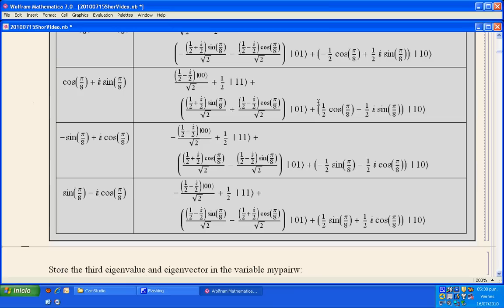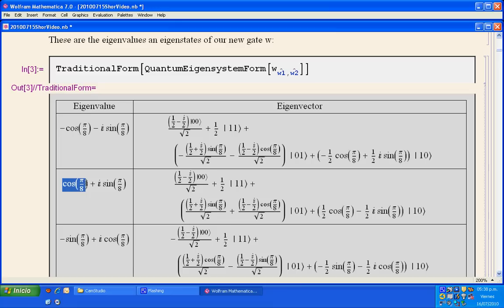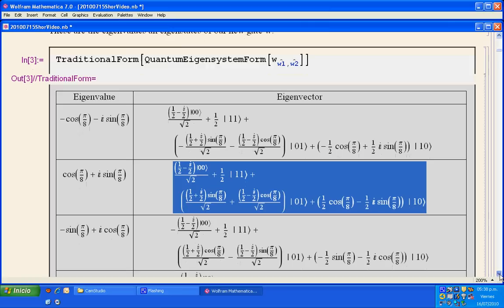With the command quantum eigensystem form, the eigenvalues and eigenstates of W are calculated. Those eigenstates are given in KET notation, and here we have the eigenvalues. Here is, for example, the second eigenvalue with the corresponding eigenstate.